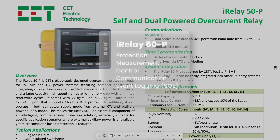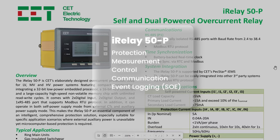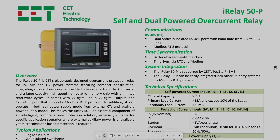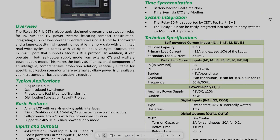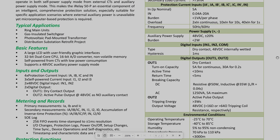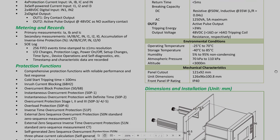The iRelay 50P is an intelligent protection system integrating protection, measurement, control, communication, and event logging. Let's take a look at the iRelay 50P datasheet for what kind of protection it offers.